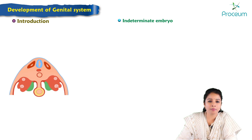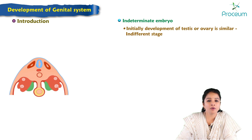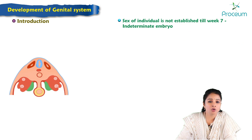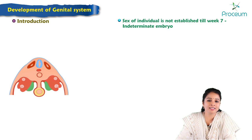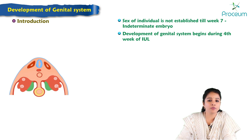In the early stage of the embryo, initially the embryo is indeterminate. We cannot make out whether it is male or female, because the development of testes and ovary are similar. This is called the indifferent stage, and only after this stage does development proceed further in a male or female direction into a definitive stage. The sex of the individual is not established till the seventh week — till seventh week it is considered an indeterminate embryo — and the development of the genital system begins during the fourth week of intrauterine life.